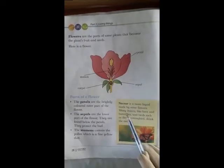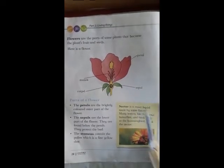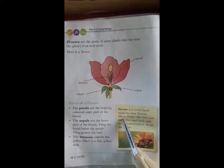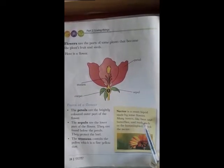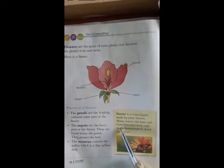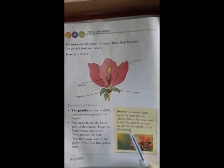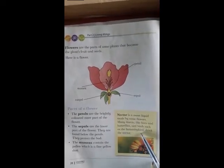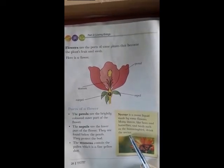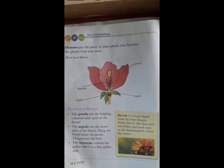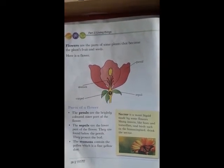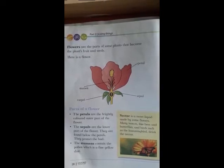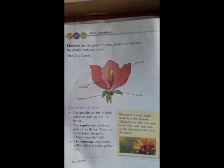Nectar is a sweet liquid made by some flowers. Many insects like bees and butterflies, and birds such as the hummingbird, drink the nectar. Do you know, students, what is nectar? Nectar is a sweet liquid made by some flowers.